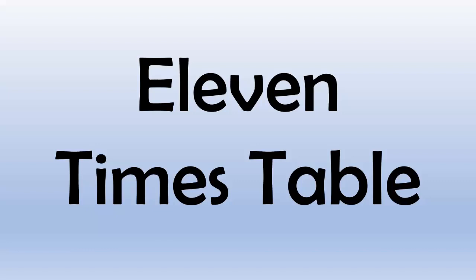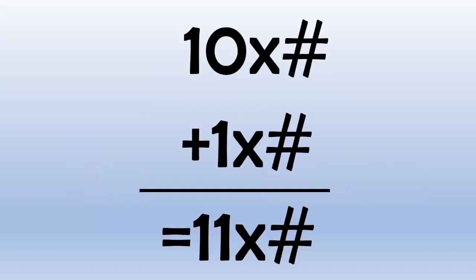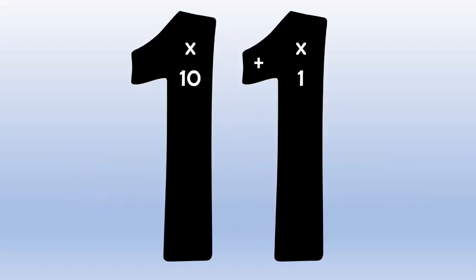When you multiply by 11, all you have to do is multiply by 10, multiply by 1, and add them together. One way to visualize this is to picture times 10 on the first one, plus times 1 on the second one.